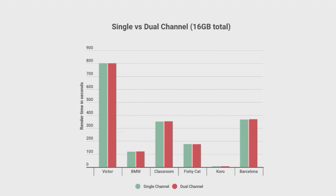The first test responded to comments that we hadn't tested upgrading from 8 to 16 gigabytes and had only looked at single to dual channel results. So this time we tested 16 gigabytes in single and then dual channel configurations, and what we found is Blender just doesn't care — it doesn't make any difference. We ran all the benchmarks from blender.org and found that single versus dual channel is not affecting render time on any of them.